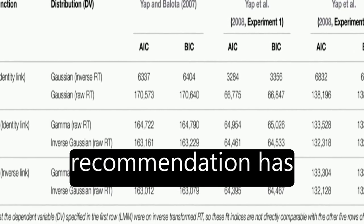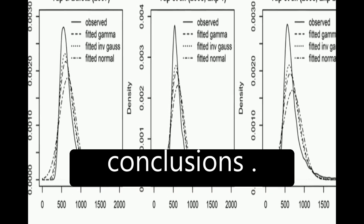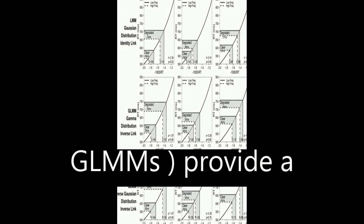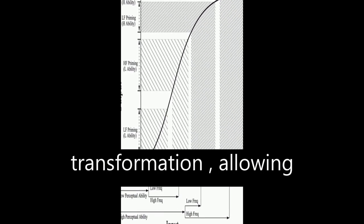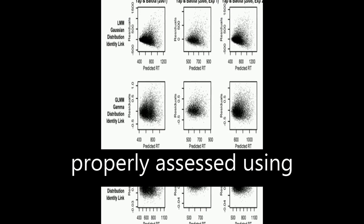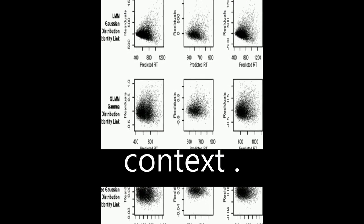Generalized Linear Mixed Effect Models, GLMMs, provide a solution by satisfying normality assumptions without the need for transformation, allowing differences between individuals to be properly assessed using the metric most appropriate to the researcher's theoretical context.